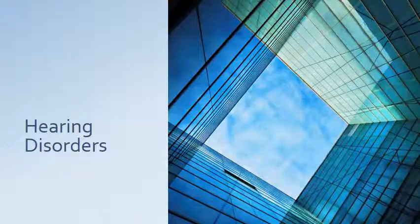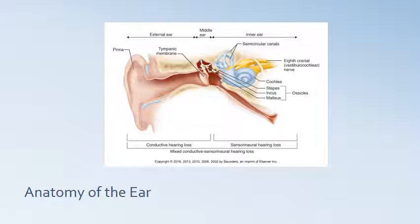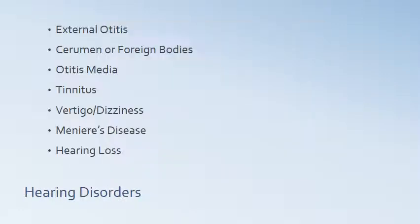Now we'll talk about hearing disorders. This is a schematic of the anatomy of the ear — the sound wave goes through the ear canal, hits the tympanic membrane which vibrates and perfectly transmits through the stapes, incus, and malleus so that we can actually hear. Hearing disorders we'll cover are external otitis, cerumen or foreign bodies, otitis media, tinnitus, vertigo and dizziness, Meniere's disease, and hearing loss.